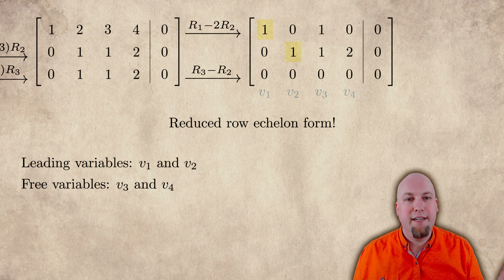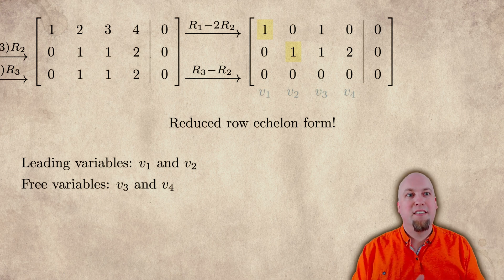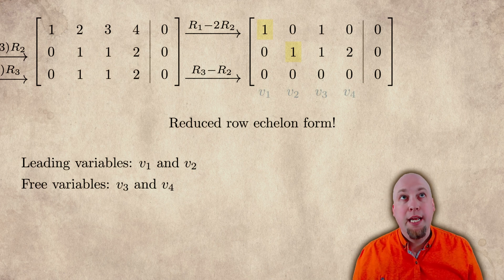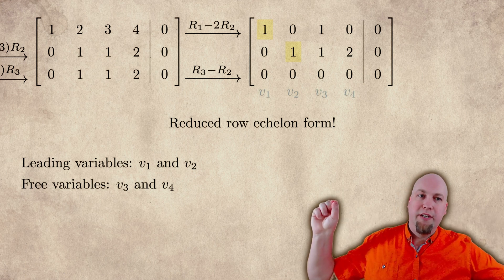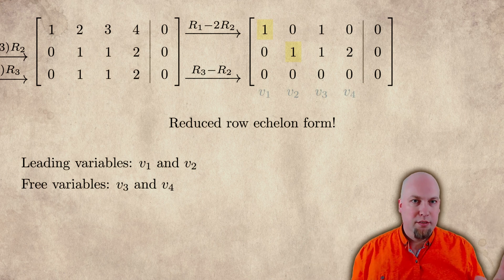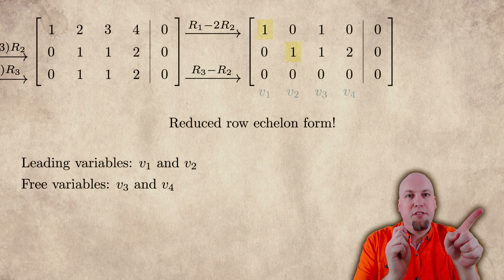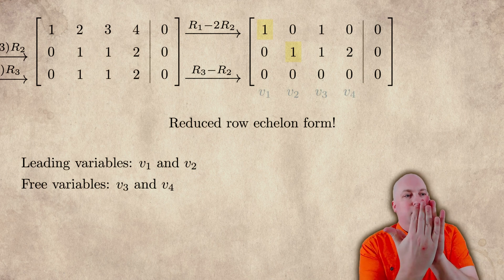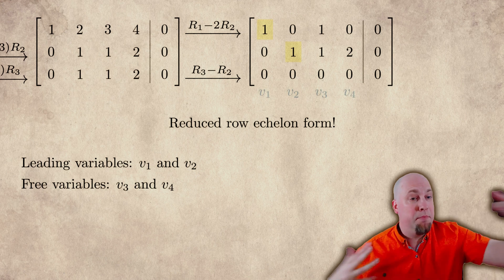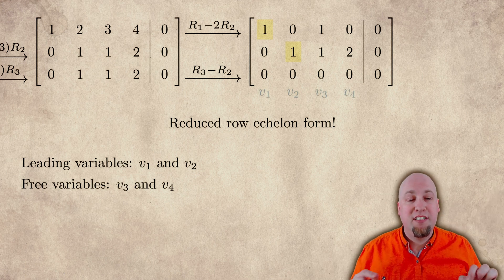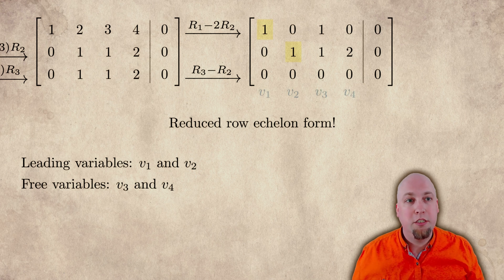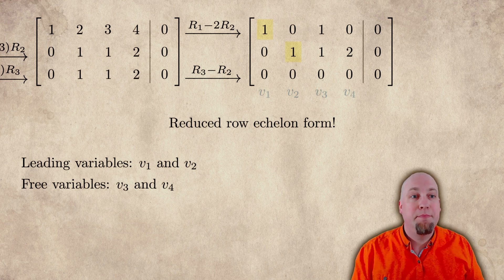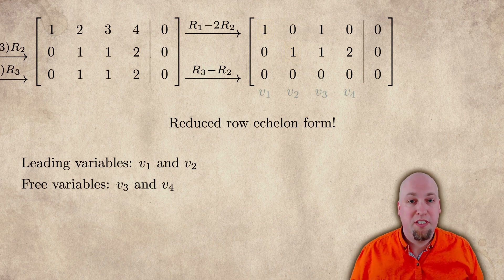This time there are two free variables. What that tells you is the solution space of this linear system is two dimensional instead of one dimensional like it was in the previous example. In other words, there's not just a one dimensional line of orthogonal vectors — there's a two dimensional plane of orthogonal vectors inside of four dimensional space. These three starting vectors lived on a two dimensional space, and there are two dimensions left over to be perpendicular to all of them.